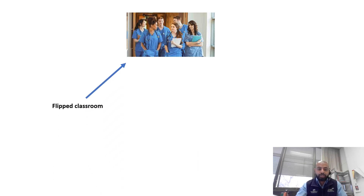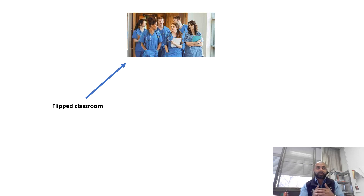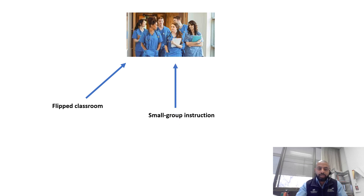Let's say you are trying to study the impact of teaching models on nursing students. The first example is a flipped classroom, where you provide students with notes and lectures beforehand so they can come prepared. Instead of receiving the lecture for the first time in class, they already have the information and know what to expect. That's called a flipped classroom.